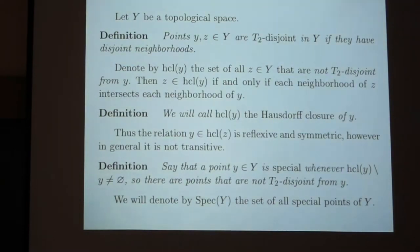I want to find points at which this space is not Hausdorff. So, to label them, I introduce a notion of T0-disjoint points, which is very wide, and say that they are T0-disjoint if they have non-intersecting neighborhoods.